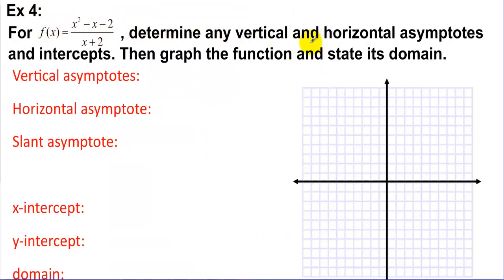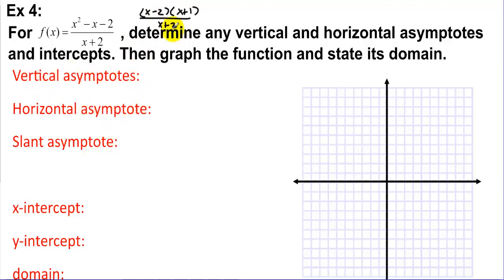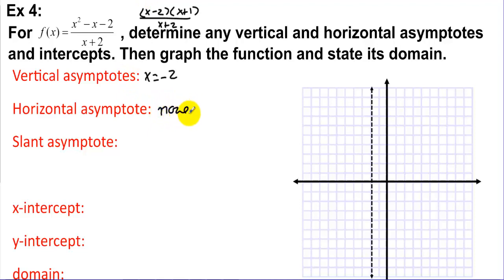Example 4 has a slant asymptote because the numerator degree is higher than the denominator degree — no horizontal asymptote. Factoring gives (x - 2)(x + 1) over (x + 2). There are no matching factors, so no holes. The vertical asymptote is at x = -2.